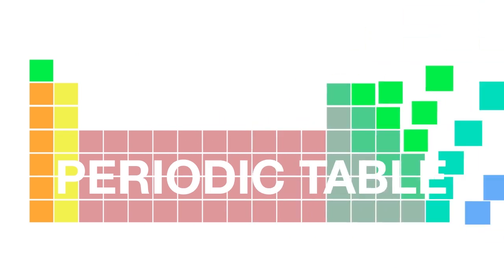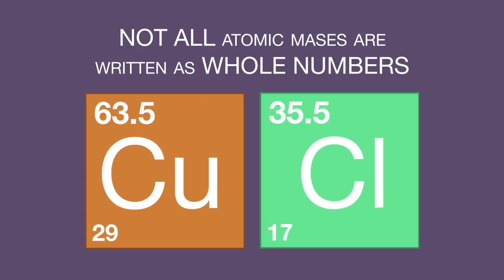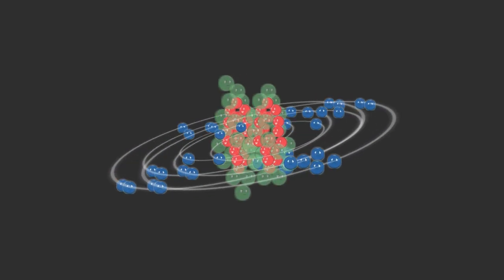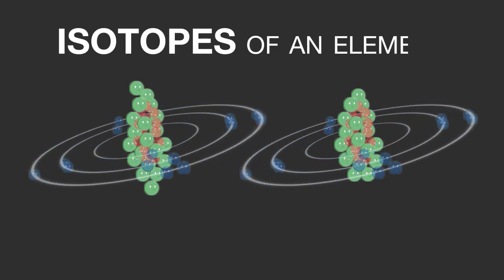As you look through the periodic table, you may have noticed that not all atomic masses are written as whole numbers. Elements can exist with slightly different numbers of neutrons. We call these isotopes of an element.